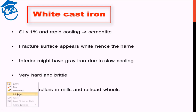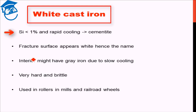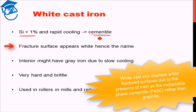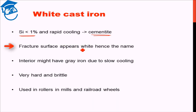Next, let us discuss white cast iron. White cast iron, contrary to gray cast iron which had a high percentage of silicon (1 to 3%), has less than 1% silicon and is cooled rapidly. Thereby white cast iron does not have graphite; rather it has the metastable cementite in it. If you fracture a white cast iron material, the fracture surface appears white — that is exactly from where the name white cast iron is derived.